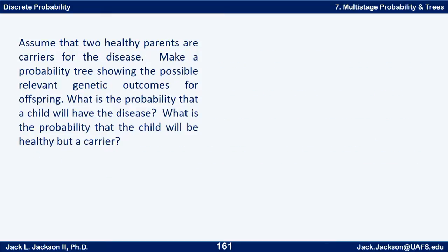So let's take that situation. Suppose that two healthy parents are carriers for the disease. Make a probability tree showing the possible relevant genetic outcomes for offspring. What's the probability that a child will have the disease? What's the probability the child will be healthy but a carrier?